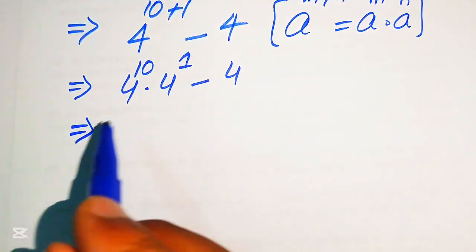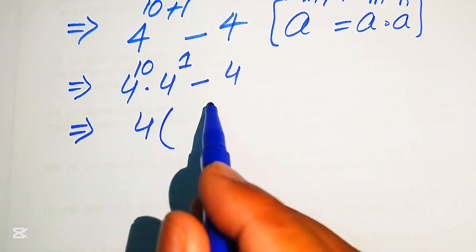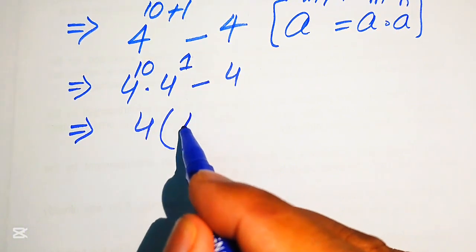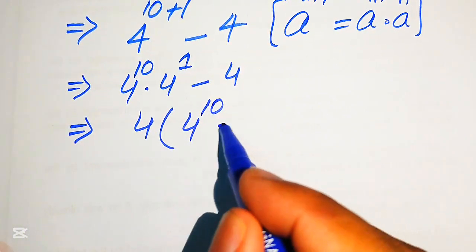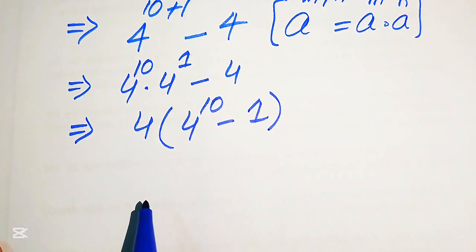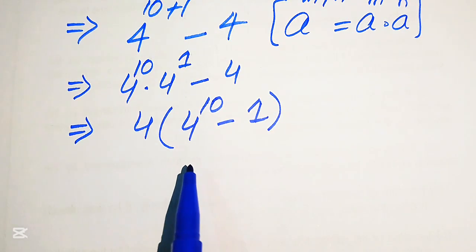Now we can see that 4 is the common term, so we take out 4 as a common factor, and we get the remaining values as 4 to the power of 10 minus 1.